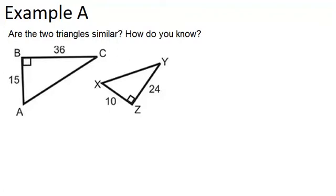In example A, it says: are the two triangles similar? How do you know? Well, what I notice is that we're given in each triangle two sides and one angle. And the angle that we're given is the included angle for the two sides we're given, because it's the angle created by those two sides. So this is a good candidate for using SAS or side-angle-side similarity, because that's what we have: a side, an angle, and a side in each case.